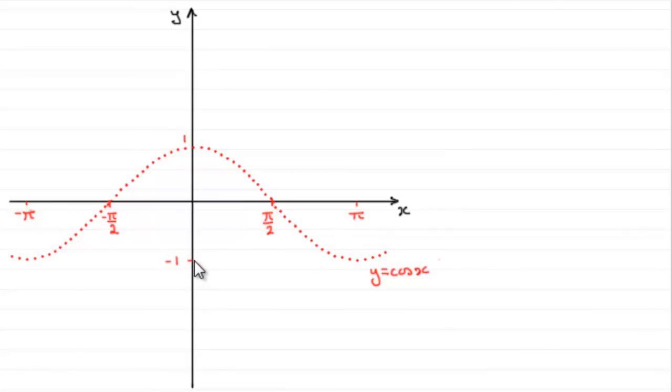And we've got a range going from minus 1 to 1. The graph would normally be a solid curve but I've just done a dotted line as you'll see later why I've done this.